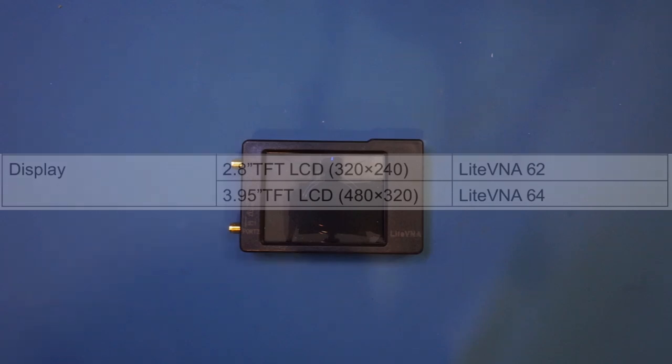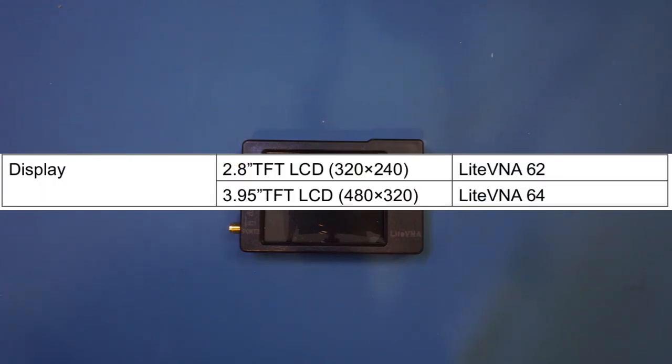The performance numbers for these two models are identical except that the 64 model has a 3.95 inch LCD versus the 2.8 inch LCD on the 62 model, and the 64 model also has a larger capacity 2 amp hour lipo battery compared to the 1.3 amp hour battery included in the 62 version. So your decision point between these two models is really just the screen size.